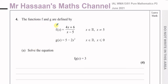We're told about two functions, f and g. Function f is defined by (4x + 6)/(x − 5), where x is an element of the real numbers and x cannot equal 5. Of course, x can't equal 5 in this reciprocal function because x = 5 makes the denominator 0, causing the function to be undefined.